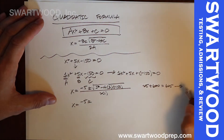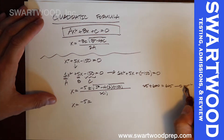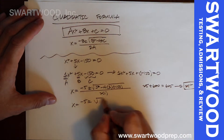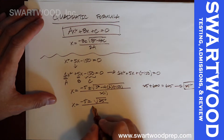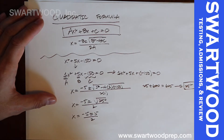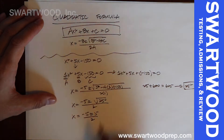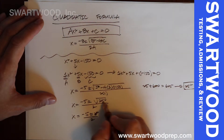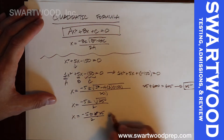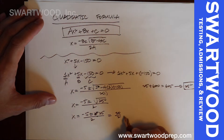We can check: 25 squared is 625, so the square root of 625 is 25. So we're taking the square root of 625 over 2 — the square root of 625 is 25, not 5. So we have negative 5 plus or minus 25, all over 2.